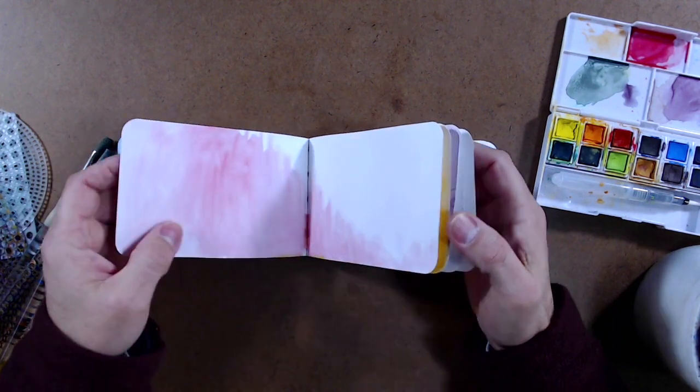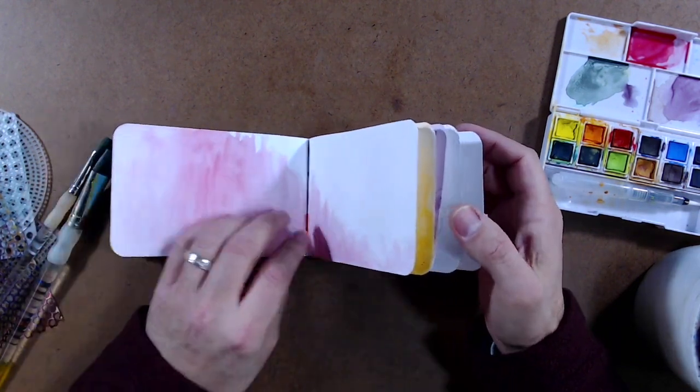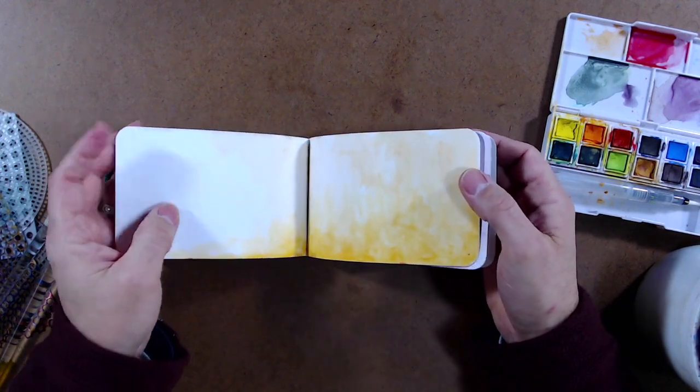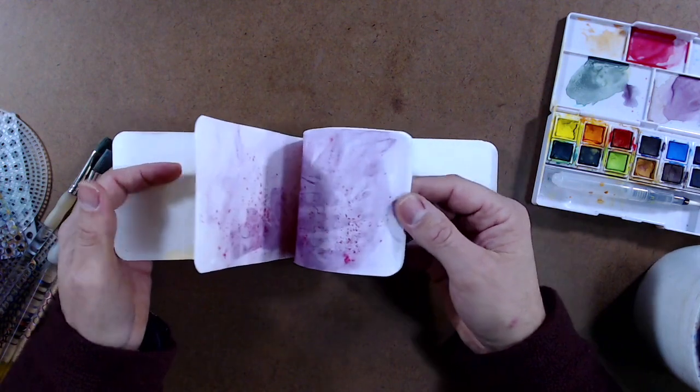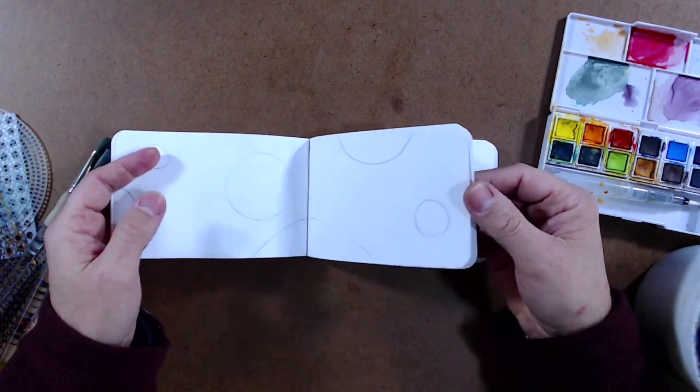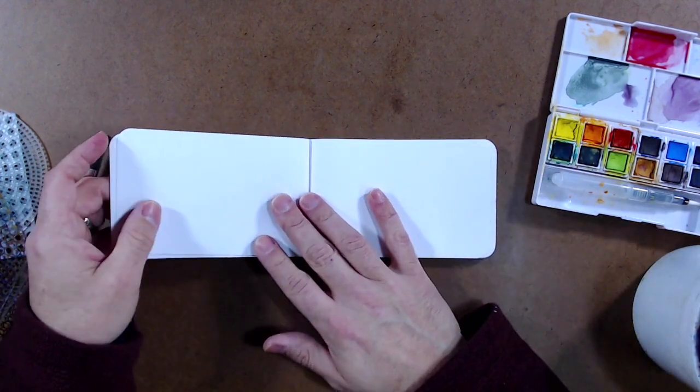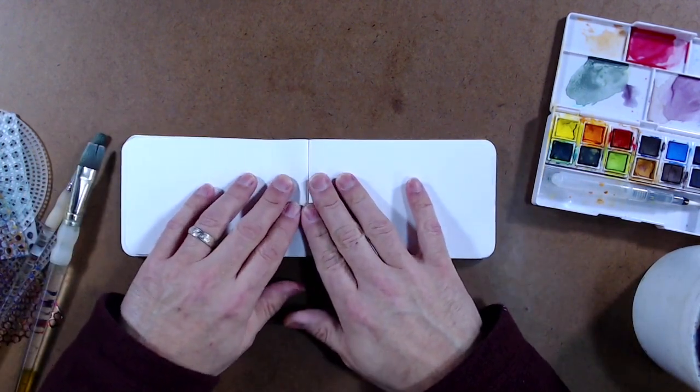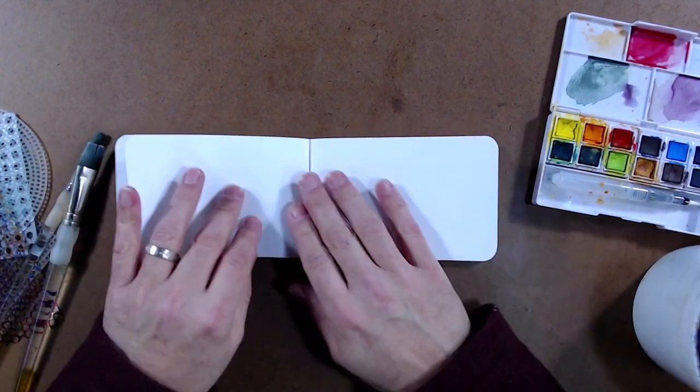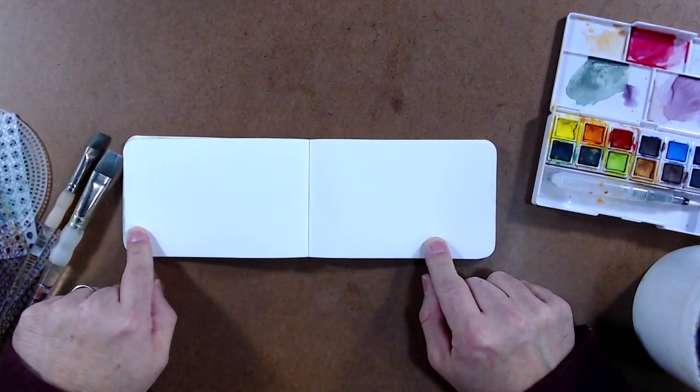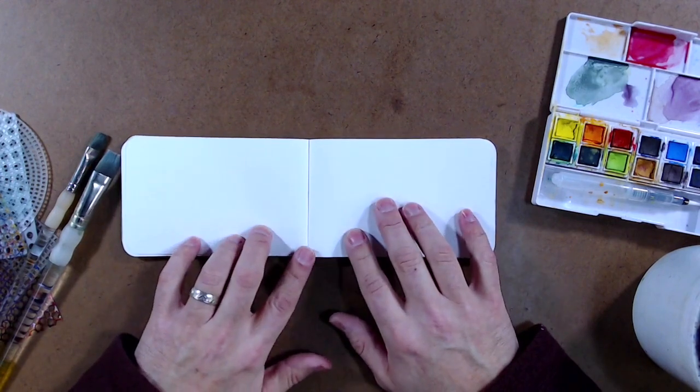If you don't like something that buckles you might want to get the heavier paper. Stillman and Birn does make a very heavy duty paper, so does Strathmore. You could do this on separate pieces of paper, you could make your own book, there really is no limit to it.